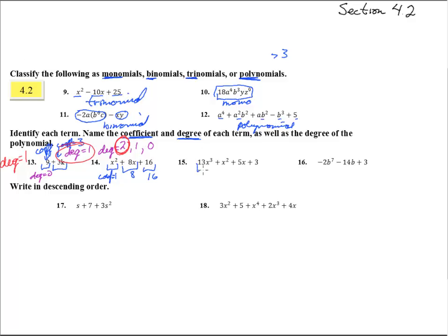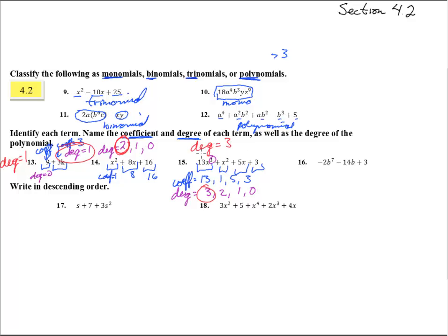Let's do number 15. This has 1, 2, 3, 4 terms. The coefficients equal 13, 1, 5, and 3 — those are the numbers in front of each variable. The degrees of each of these are 3, 2, 1, and 0. So the degree of the entire polynomial is the biggest one, which is 3. This is a third degree polynomial.